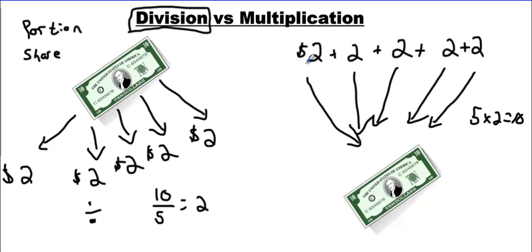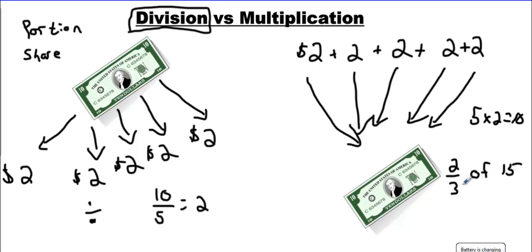Multiplication involves putting things back together again. Division involves splitting them up — dividing them into equal-sized portions. Also, you can use the word 'of' to indicate multiplication, only if you have a number on each side. If you have two numbers on each side and the word 'of' is in the middle, you know you've got a multiplication equation. Even if you don't understand that you're adding things together, it means multiply.